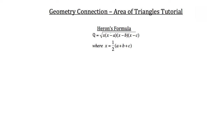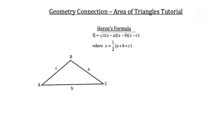...times the quantity X minus C, where X is equal to one-half of side lengths a plus B plus C. So for triangle ABC, these are the side lengths you would be adding up and then dividing by two to solve for X.